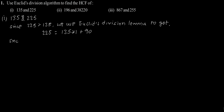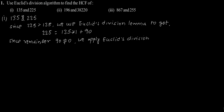Now, since the remainder, that is 90, is not equal to 0, we apply Euclid's division lemma to 135 and 90 to get 135 = 90 × 1 + 45.